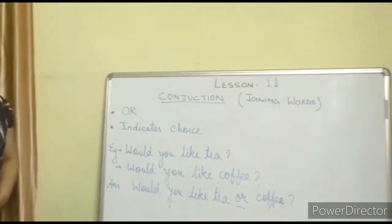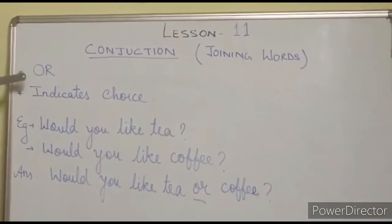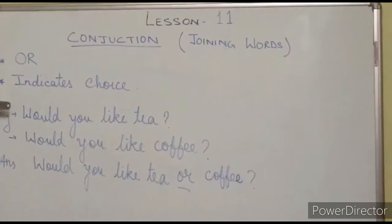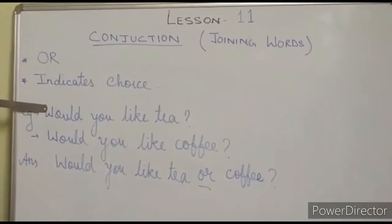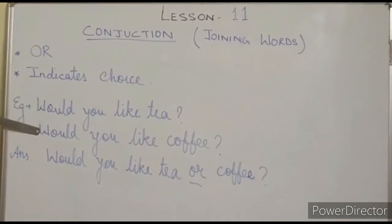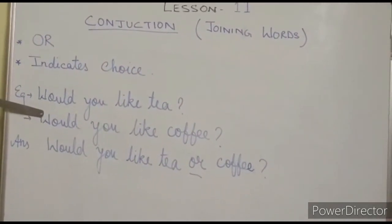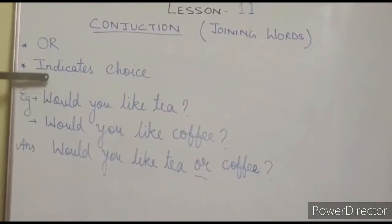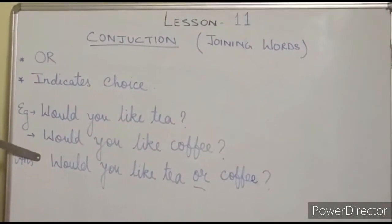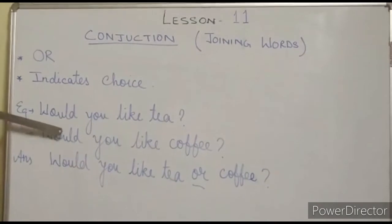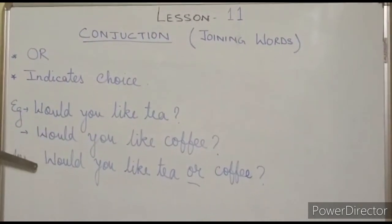Have a look once again. 'Or' indicates choice. Two sentences: 'Would you like tea?' and 'Would you like coffee?' If asked to join these two sentences, because it is a choice, we use 'or.' The answer is: 'Would you like tea or coffee?'